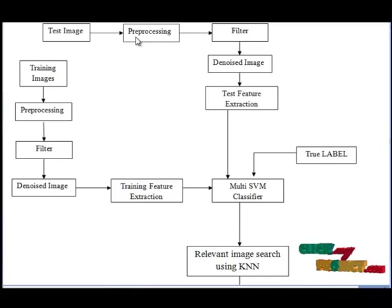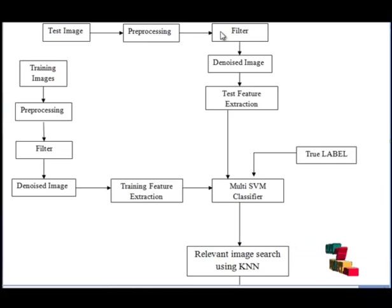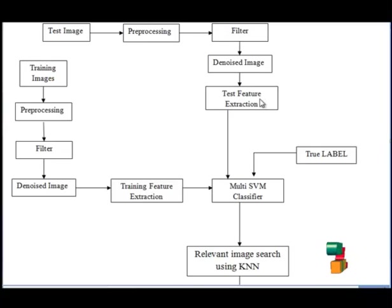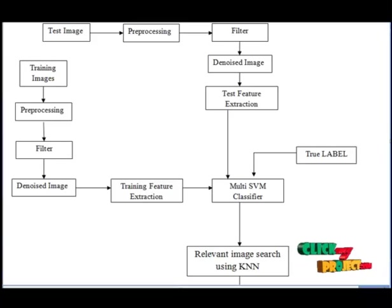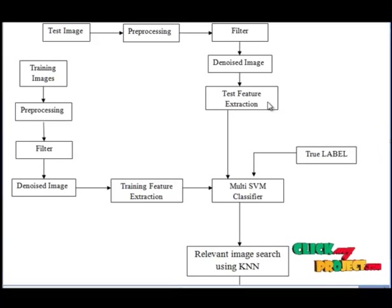The preprocessing is done quickly. Then the preprocessed image goes into the filtering process. In the filtering process, we use filters to remove the noise in the image and smooth the image pixels for further processing. Then the denoised image goes to the feature extraction process, where we use GLCM feature extraction.